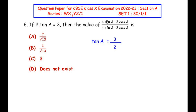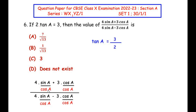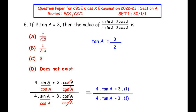Now let us divide each term in the numerator and the denominator by cos A. We get (4 sin A/cos A + 3 cos A/cos A) divided by (4 sin A/cos A − 3 cos A/cos A). We do this because sin A/cos A gives us tan A, and we have tan A = 3/2. So cos A cancels in each term, and sin A/cos A is replaced by tan A, giving us (4 tan A + 3) / (4 tan A − 3).